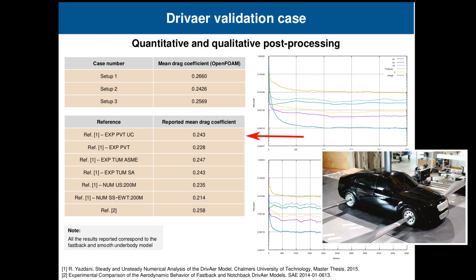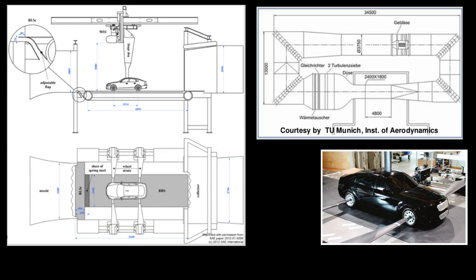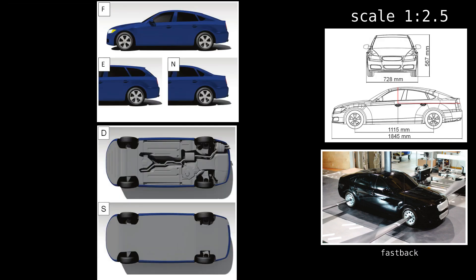Out of all the data available, the wind tunnel data will be our reference. Wind tunnels have inaccuracies, but they are using real air. In this case, a tunnel with a moving ground and a decent cross-section is 1-to-2.5 scale, with modular components — most notably interchangeable rear cabin versions: a fastback, notchback, and estate.